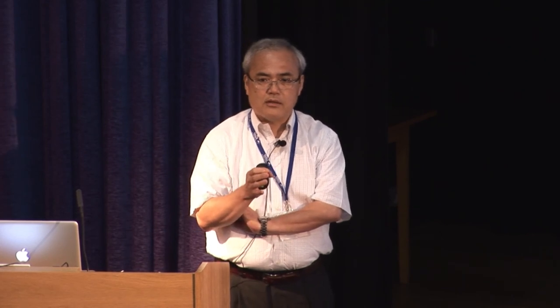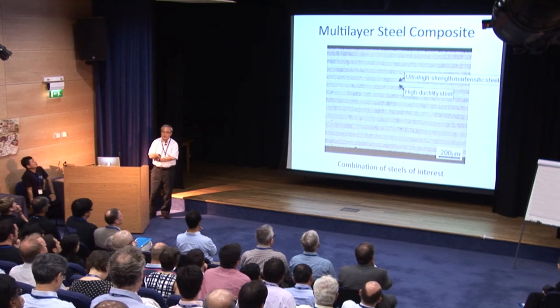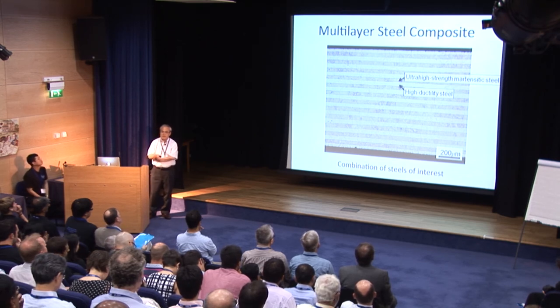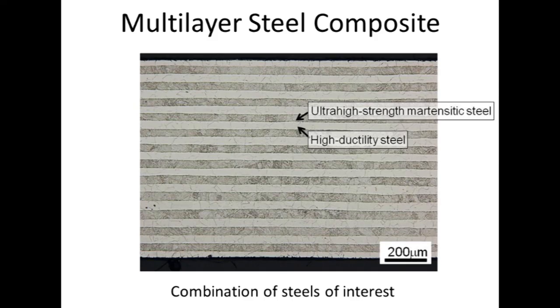Today, I'm talking about externally designed multi-layer steels. This is an example of multi-layer steels, where we combine high-strength as-quenched martensite and high-ductility steel to achieve a combination of high strength and high ductility. Although this is a 25-layer steel, the number of layers could be fewer, depending on the combination of steels, as I will mention later.